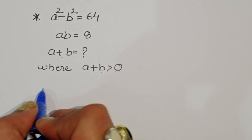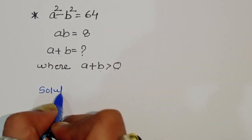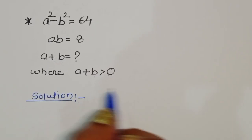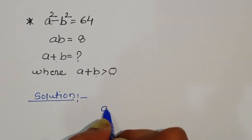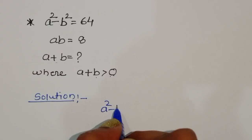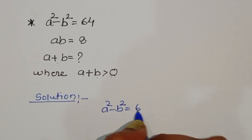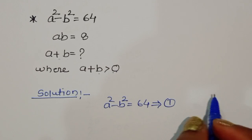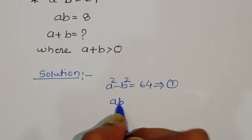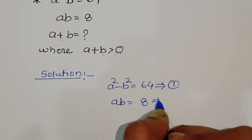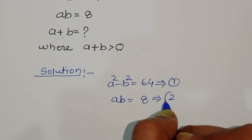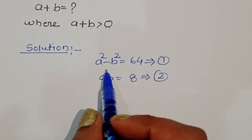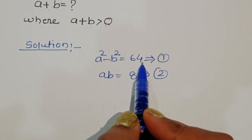Let's see the solution — how we can find the value of a + b. We label a² - b² = 64 as equation 1, and ab = 8 as equation 2.